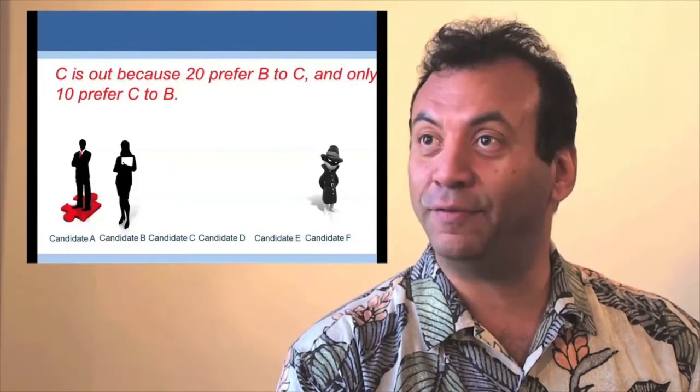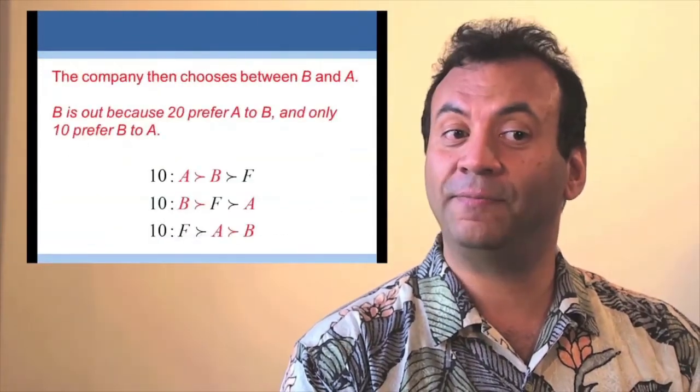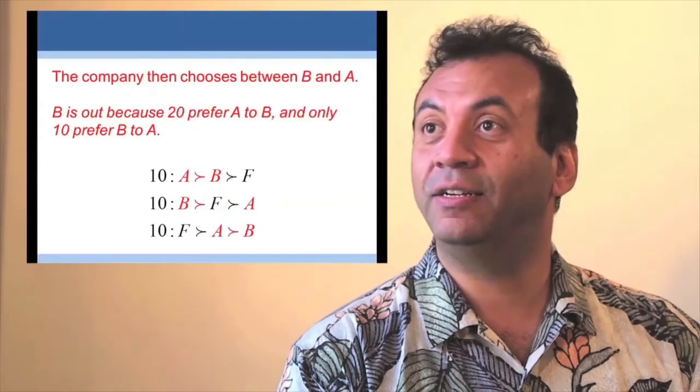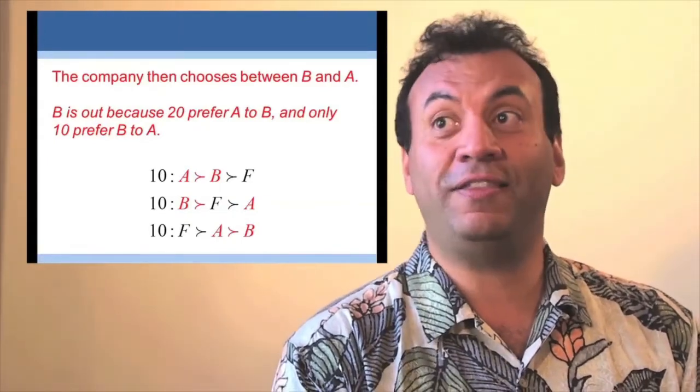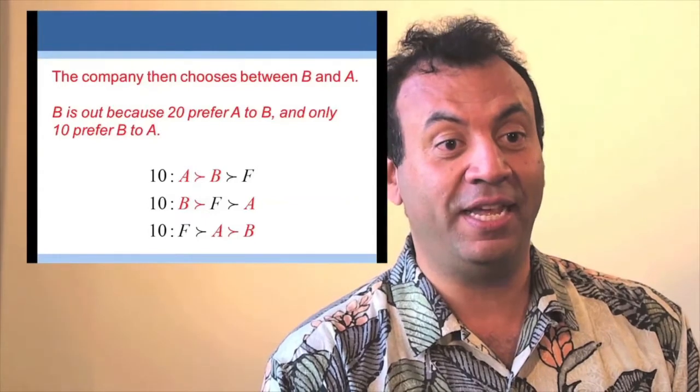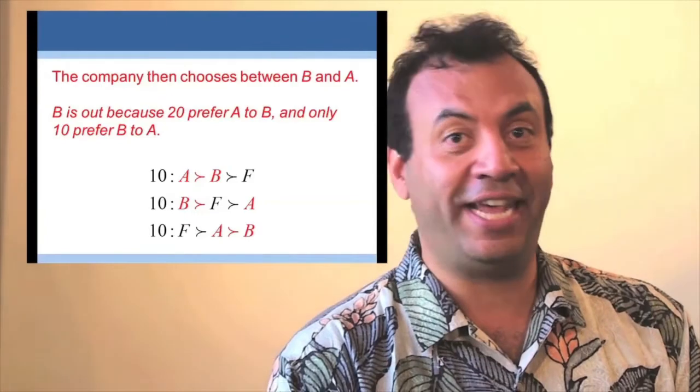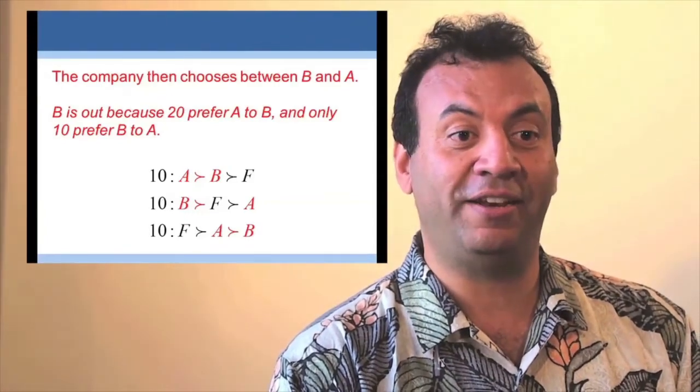We do it again. We ask, who do you prefer, A or B? Notice again that 20 people prefer A to B and only 10 prefer B to A. Therefore, A will win and candidate B will be eliminated.